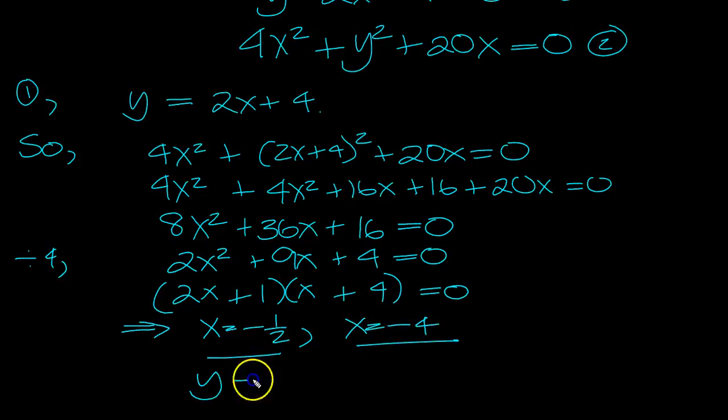So y is equal to 2x plus 4. 2 of these is minus 1 plus 4 is 3. Minus 4 is minus 8 plus 4 is minus 4. There you go. Thank you.